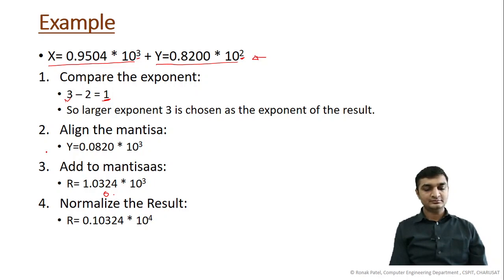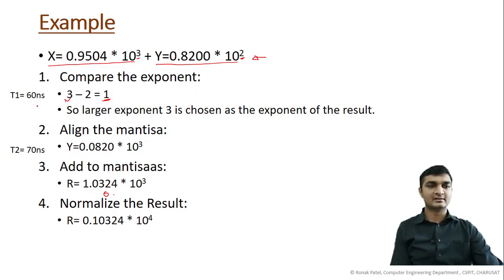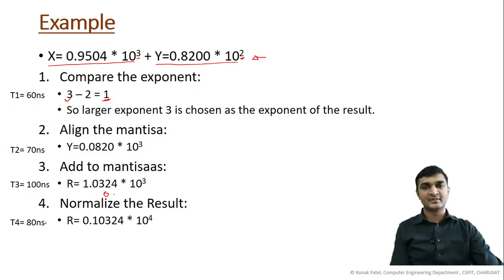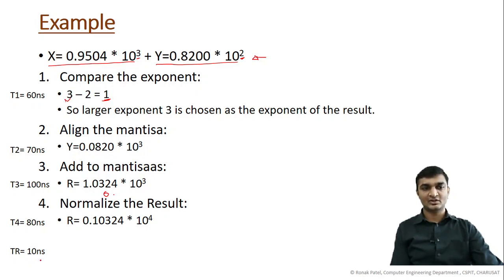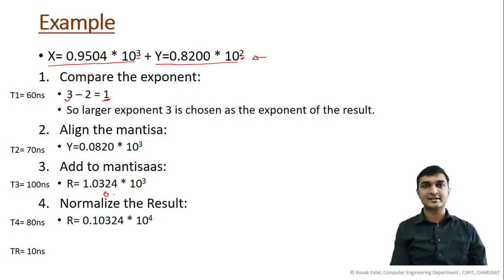Suppose the timing for each segment is: segment 1 (compare exponent) = 60 nanoseconds, segment 2 (align mantissa) = 90 nanoseconds, segment 3 (add mantissa) = 100 nanoseconds, and segment 4 (normalize result) = 80 nanoseconds. Between each operation we place registers to transfer data, and the register delay is 10 nanoseconds.